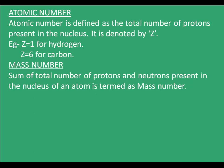Atomic number is defined as the total number of protons present in the nucleus. It is denoted by the capital letter Z. For hydrogen, the number of protons is 1, therefore Z=1. For carbon, the number of protons is 6, hence Z=6. Mass number is the sum of the total number of protons and neutrons present in the nucleus of an atom.